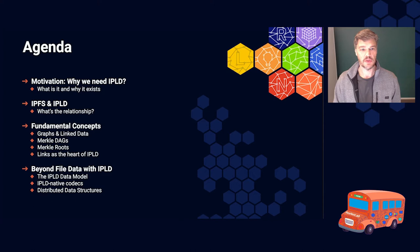We're going to look at the motivation, why we need IPLD, what is it, why does it exist, why is it a separate thing, look at the relationship between IPFS and IPLD. We're going to look at some fundamental concepts, so we're going to dig in a bit to graphs and linked data and then we'll talk about Merkle DAGs and Merkle Roots. We'll explain some of these terms and we'll talk about links because they really are at the heart of IPLD.